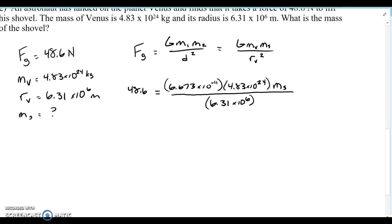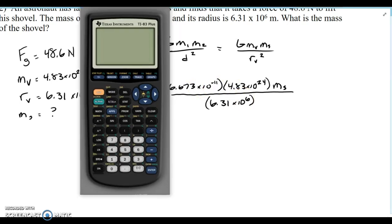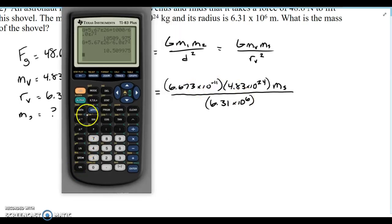If you multiply the numerical parts, I have G stored in there: G times the mass of Venus, 4.83, times E to the 24.